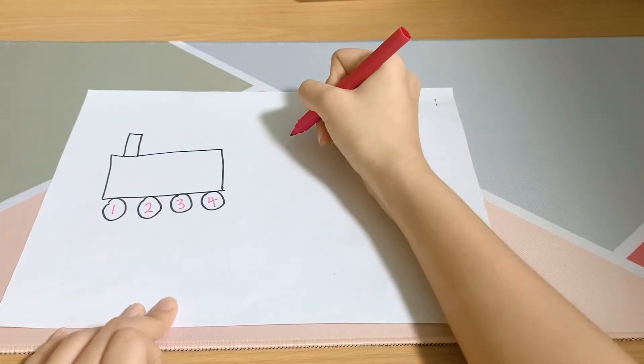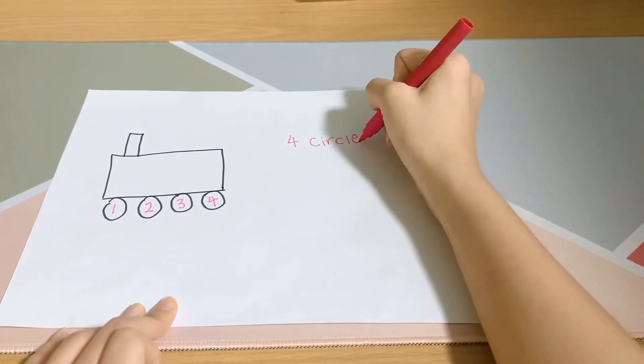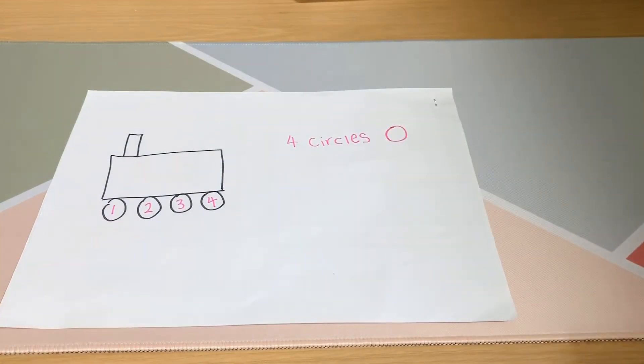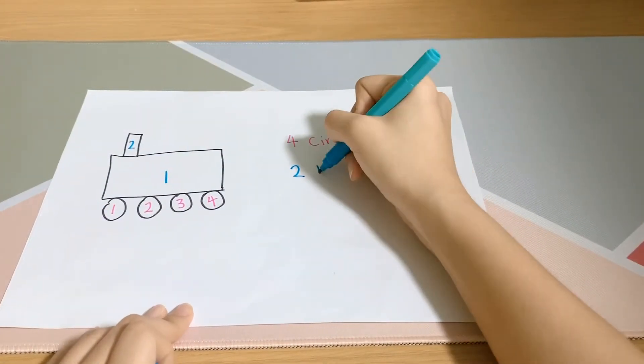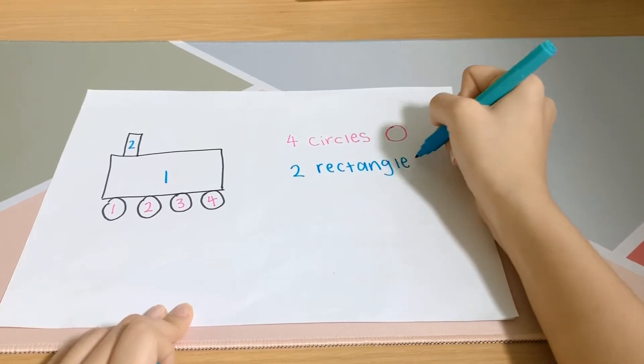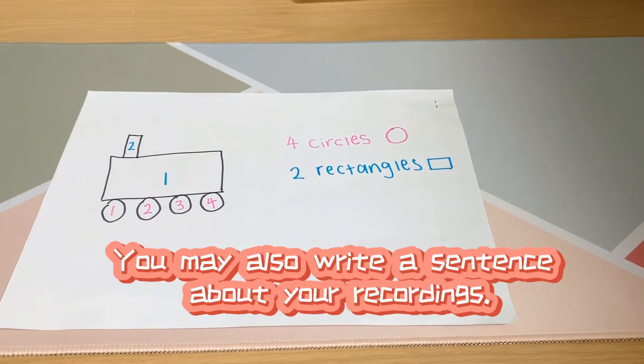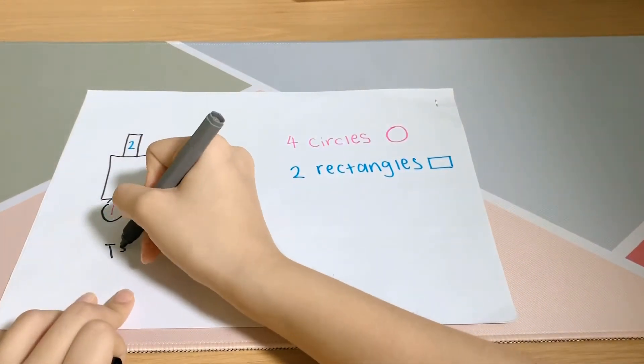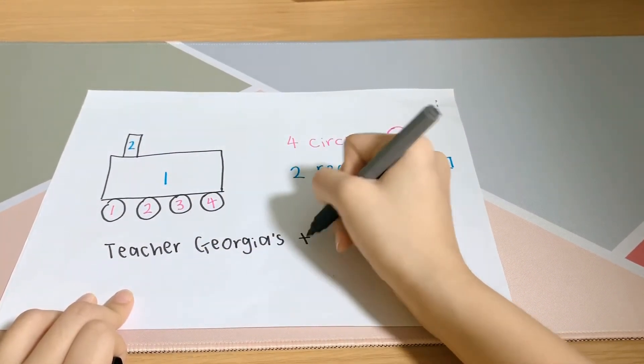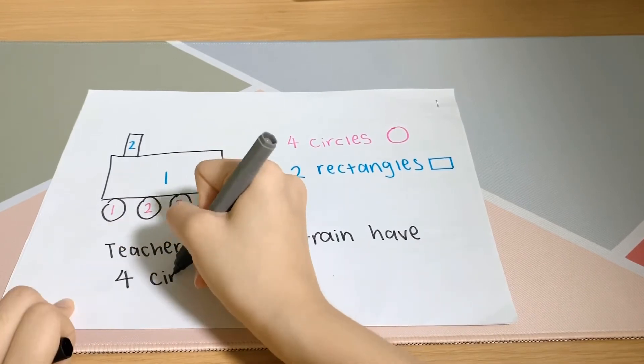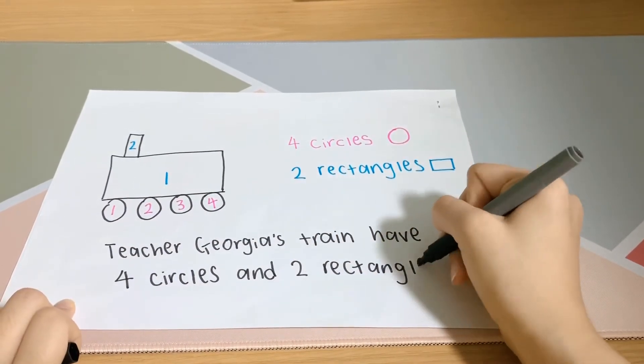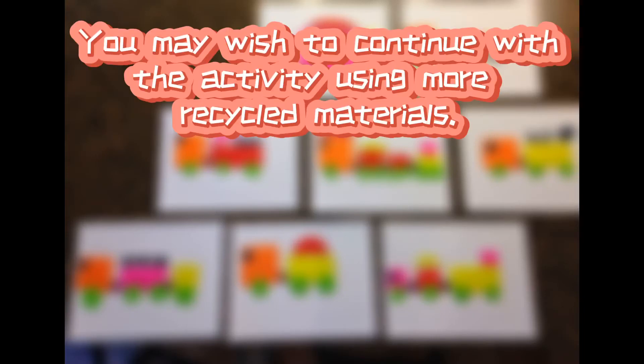...and four circles, followed by one rectangle and two rectangles. You may also write a sentence about your recordings, and now we'll write: Teacher Georgia's train have four circles and two rectangles. You may wish to continue with the...